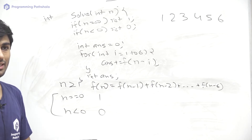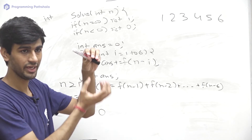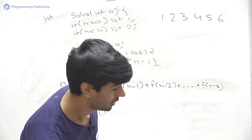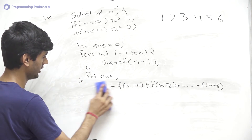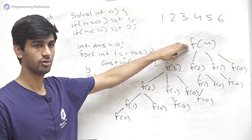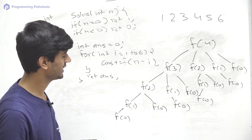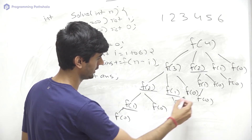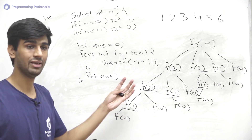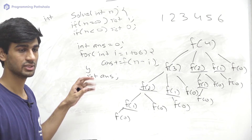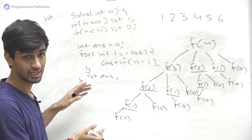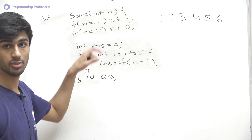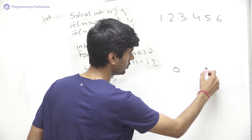However, this recursive code has exponential time complexity. The first node makes 6 recursive calls, each of those makes 6 more, so it grows exponentially. Looking at the recursive tree for f(4), we can see many function calls are repeated — for example, f(2) is called multiple times, and f(1) is called many times. So we have overlapping subproblems, and we can store and reuse their answers instead of recalculating.